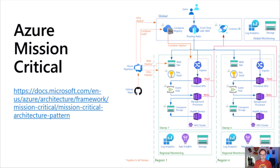In short, the mission critical workload sample uses source control — GitHub or Azure Repos — automation via Azure Pipelines or GitHub Actions, and infrastructure as code with ARM templates, Bicep, or Terraform. The workload runs as a containerized application inside a Kubernetes cluster deployed in multiple regions. If you're not using containers, you can do the same with web apps and app services across regions with load balancers, and any database backend — SQL, MySQL, Postgres, Azure SQL as a service, Cosmos DB.